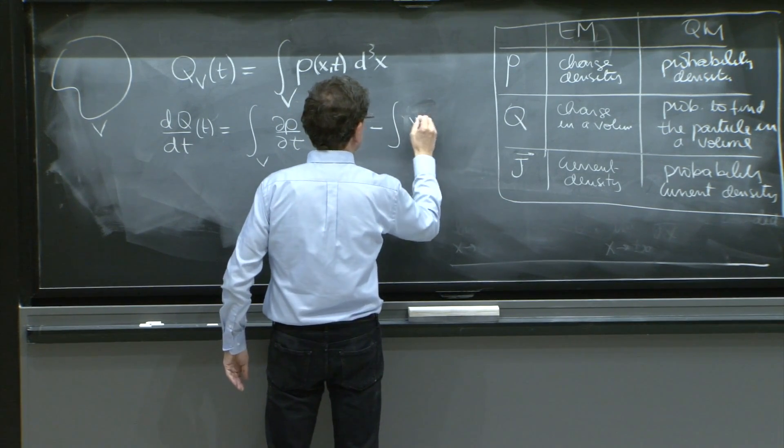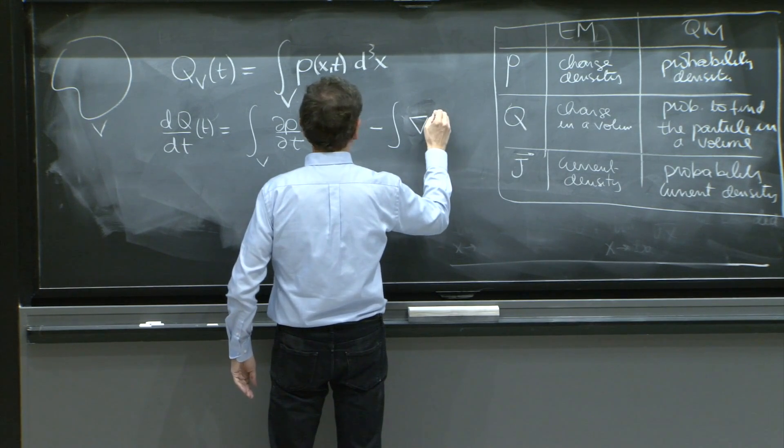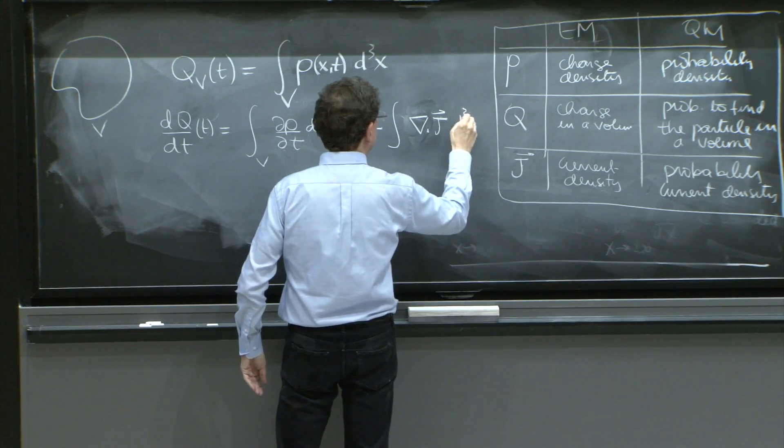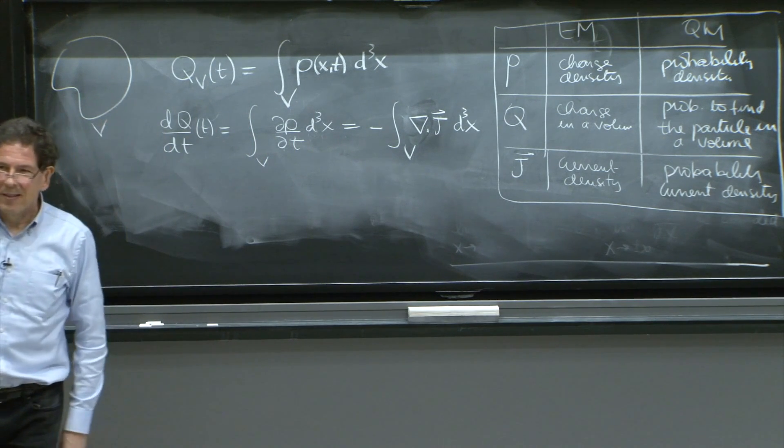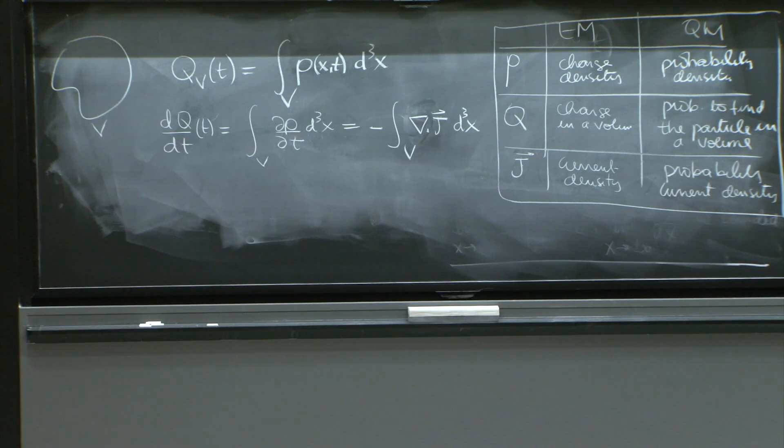This is equal to minus the integral of j, no, of divergence of j, d cube x. This is equal to minus over the volume. OK. But then, Gauss's law. Gauss's law tells you that you can relate this divergence to a surface integral.